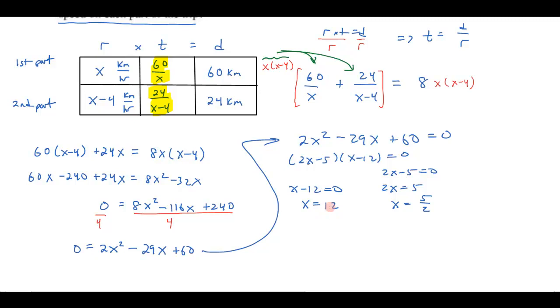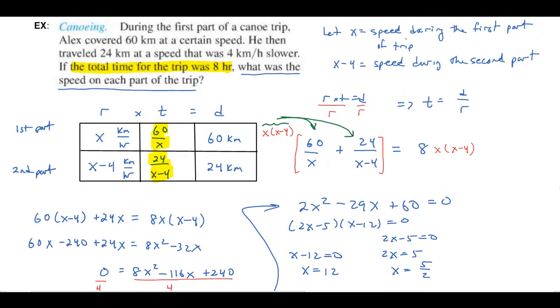So I have my answer. It's either x equals 12 or x equals 5 halves. Well, what was x again? x was the speed during the first part of the trip. And then x minus 4 is the speed during the second part of the trip. Well, notice that if x was 2 and a half for the first part of the trip, x minus 4 would be negative, wouldn't it? So this one's not going to work. This one won't work since x minus 4 would then be negative.